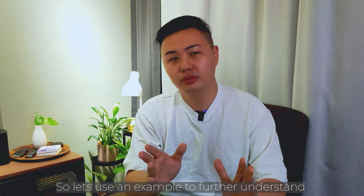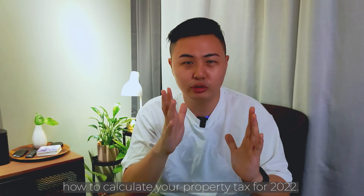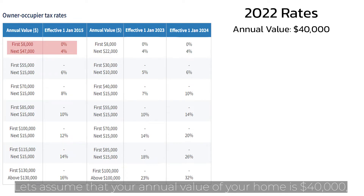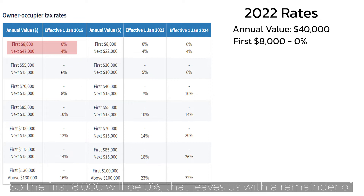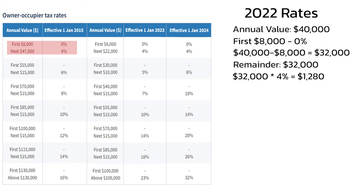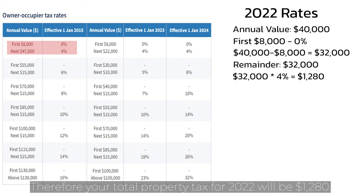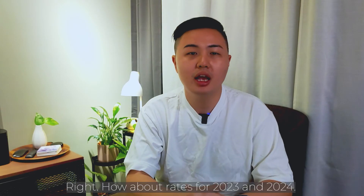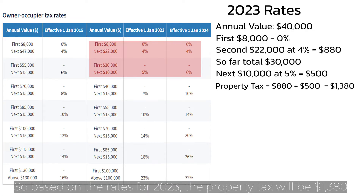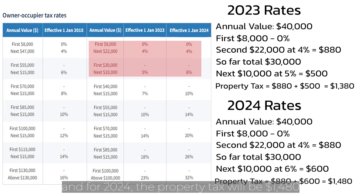Let's use an example to further understand how to calculate your property tax for 2022. Let's assume your annual value is $40,000. The first $8,000 will be at 0%, leaving a remainder of $32,000 payable at 4%, giving a total property tax for 2022 of $1,280. For 2023, the property tax will be $1,380 — an increase of $100. And for 2024, it will be $1,480 — another $100 increase from 2023.